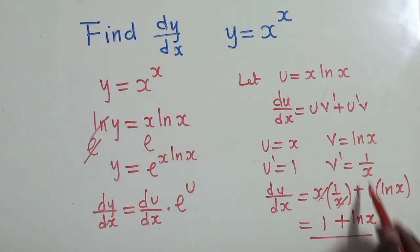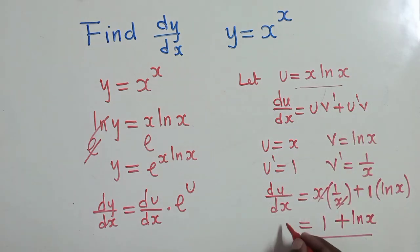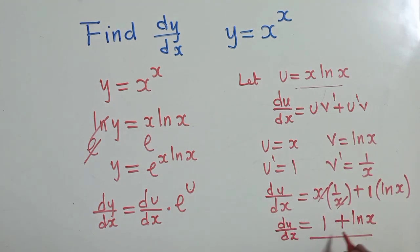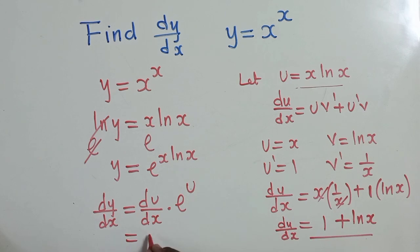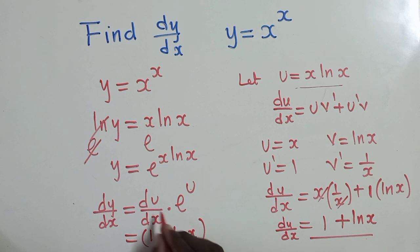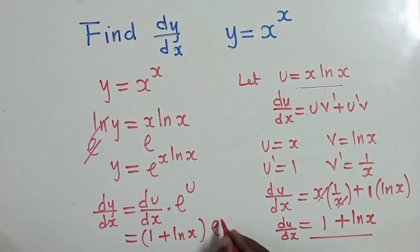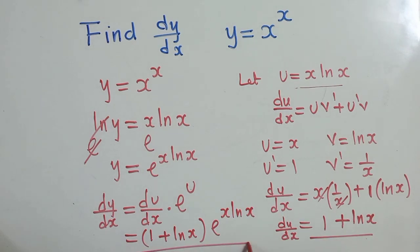This is the derivative of u. Getting back to our formula, du/dx is 1 plus ln(x), and e^u, where u is x·ln(x). So our solution at this stage is (1 + ln(x)) · e^(x·ln(x)).